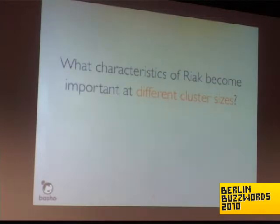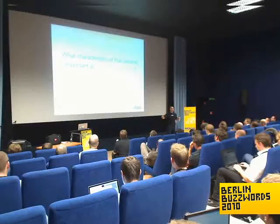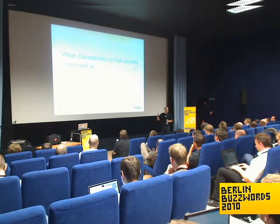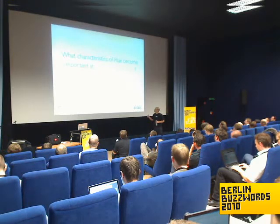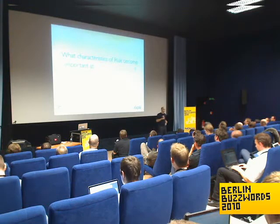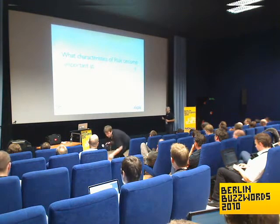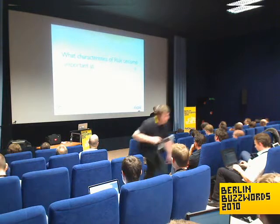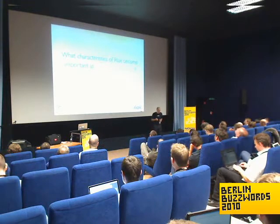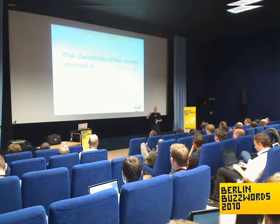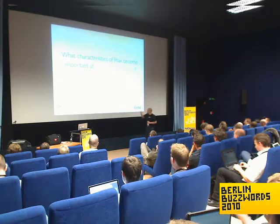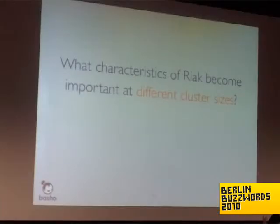One thing I want to stress is that all of these characteristics are present at all times in a Riak cluster, and they are all available in the open source model. But different things become important at different times — just like in your car, some things become important at 100 kilometers per hour, other things at 200 kilometers per hour.